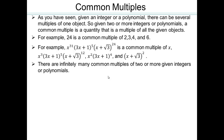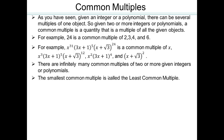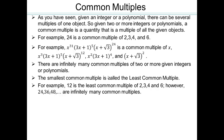There are infinitely many common multiples of two or more integers or polynomials. The smallest amongst all the common multiples is called the least common multiple. For example, 24 is a common multiple of 2, 3, 4, and 6, but 12 is the least common multiple of 2, 3, 4, and 6. The common multiples of those numbers would be 12, 24, 36, 48, and so on, and 12 is the smallest such number.